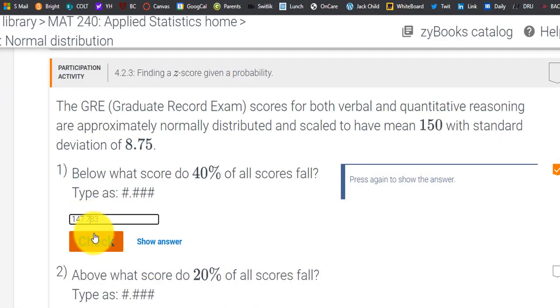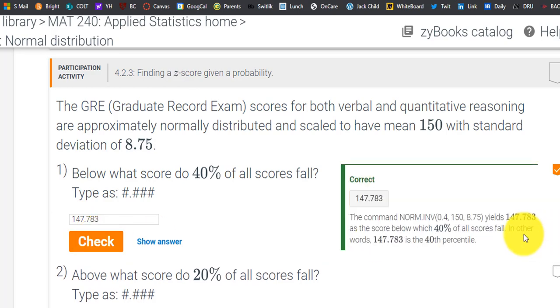Let's check our answer. Hey, we got it. We use the norm inverse function. 0.4 was the probability. 150 was the given mean. 8.75 was the standard deviation. So 147 is the score below which 40% of all scores fall. So 40% of the test takers, they scored a 147 or less. Or we can call that the 40th percentile.